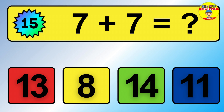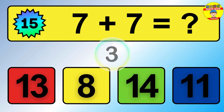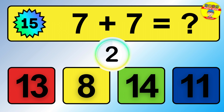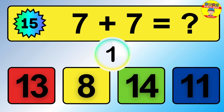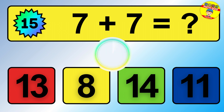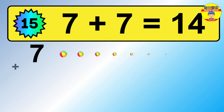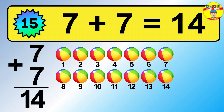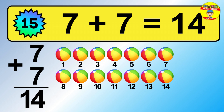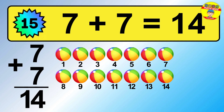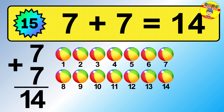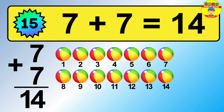Question 15. 7 plus 7 equals what? So the answer is 7 plus 7 is 14. Let's count it: 1, 2, 3, 4, 5, 6, 7, 8, 9, 10, 11, 12, 13, 14.